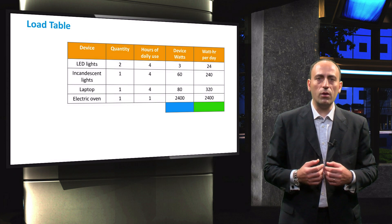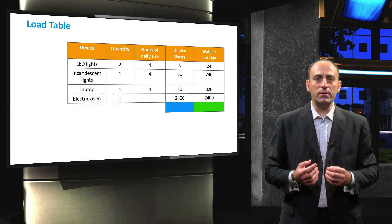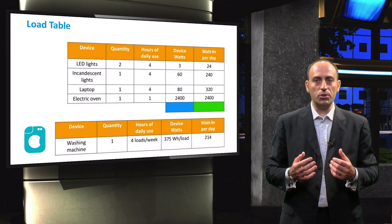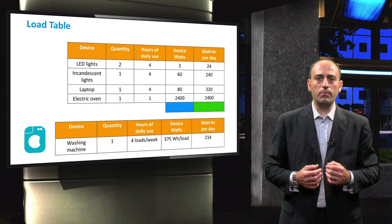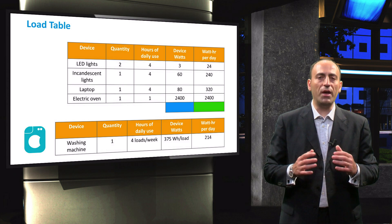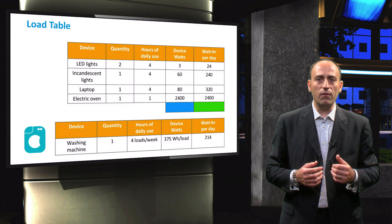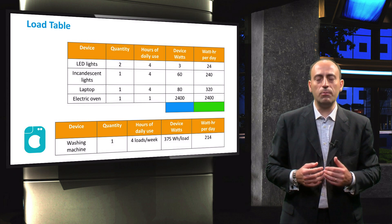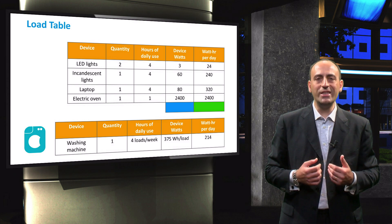If a certain load is used only a few times a week, rather than every day, then their equivalent daily energy use should be determined. For example, consider a washing machine in a typical household. We assume that it is operated four times a week and consumes about 375 Wh of energy for each operation. To obtain the equivalent daily energy use, we multiply 4 by 375 Wh and divide it by 7 days. This corresponds to a daily energy use of 214 Wh.